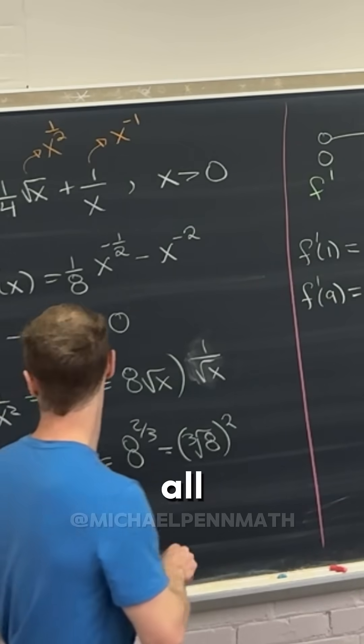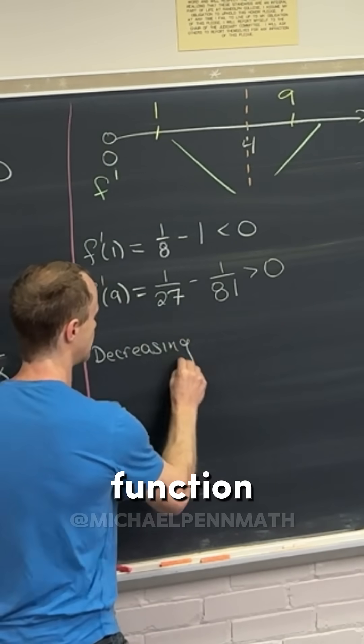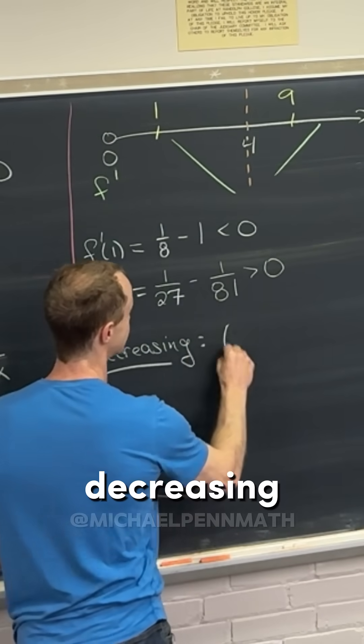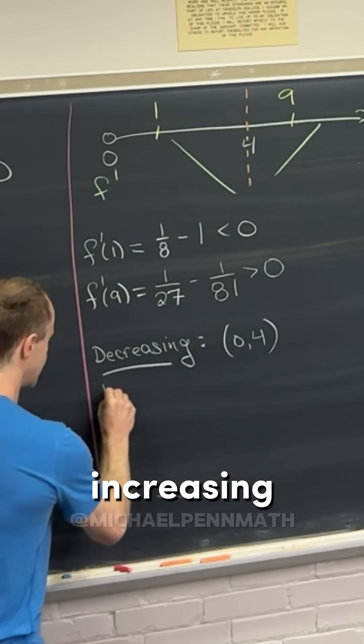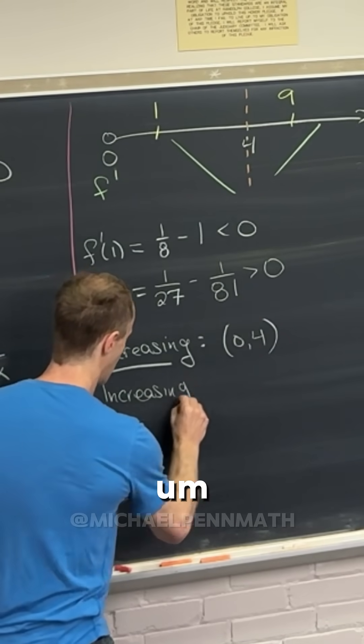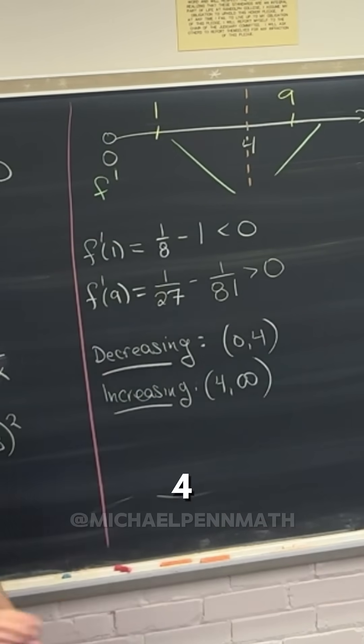So now we can put this all together and we have that our function is decreasing on the interval from 0 to 4, and then it's increasing on the interval from 4 to infinity.